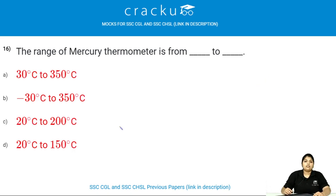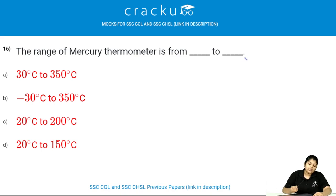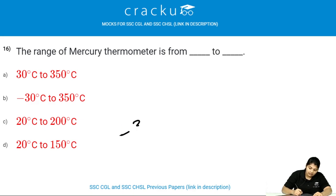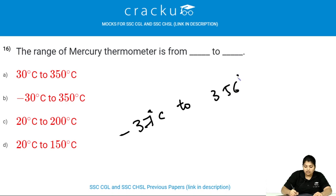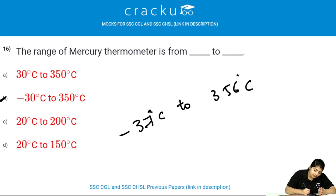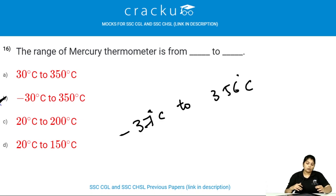The range of a mercury thermometer is from minus 37 degrees centigrade to 356 degrees centigrade. However, according to the given options, the answer should be minus 30 degrees centigrade to 350 degrees centigrade.